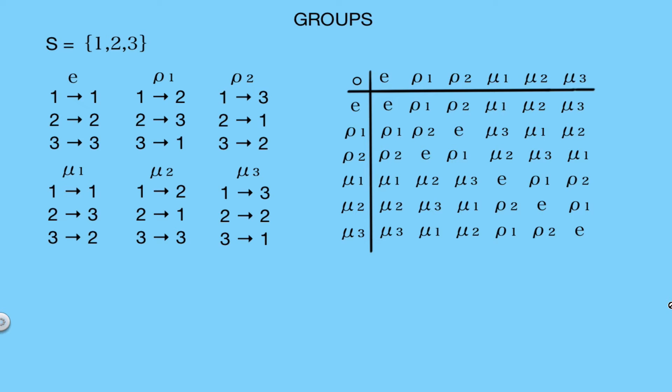Now the identity element is the element E, and you can see on our table that any other element composed with the identity just returns the original element, which is exactly what is required from an identity element.